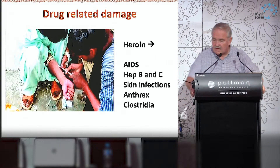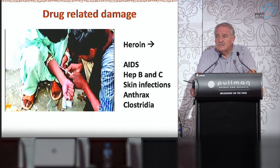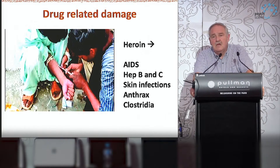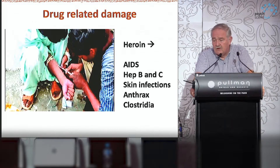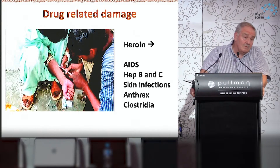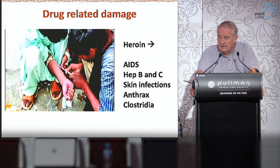Another variable we looked at is drug-related damage — the damage that using a drug might do because of the way you use it. There's a strong relationship between injecting drug use and blood-borne viruses, but also relationships with other disorders. In Britain, outbreaks of anthrax and clostridia are very often associated with the use of heroin that's come from Afghanistan.